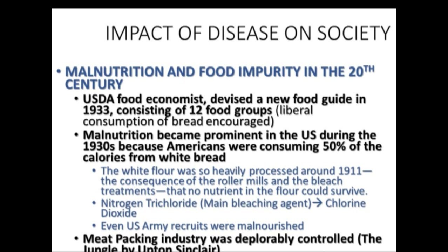In addition, the meatpacking industry was deplorably controlled. The book The Jungle, published by Upton Sinclair, showed how the packing industry was completely out of control with a high prevalence of unsanitary practices, leading to poor-quality meat distribution. This book single-handedly caused the American public to demand pure food, and the Pure Food Act of 1906 and the Meat Inspection Act of 1906 were instituted in Congress because of this public outcry.